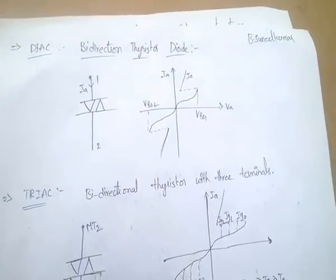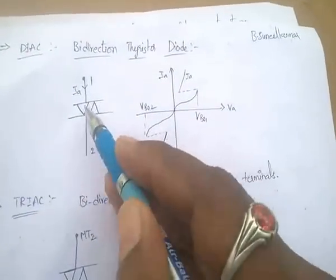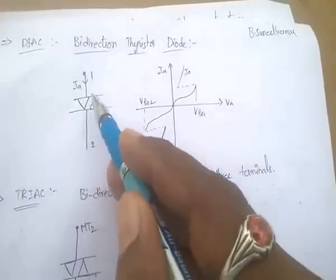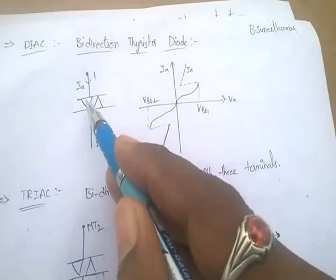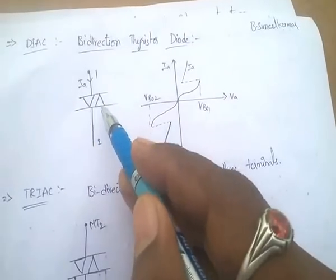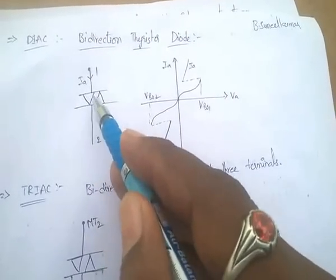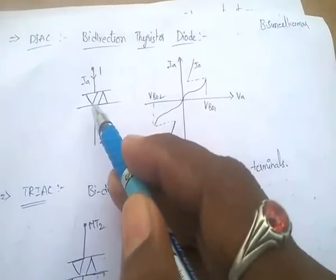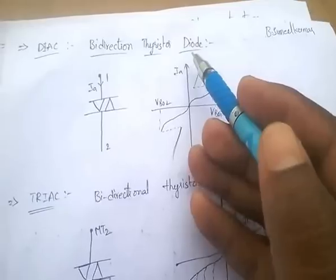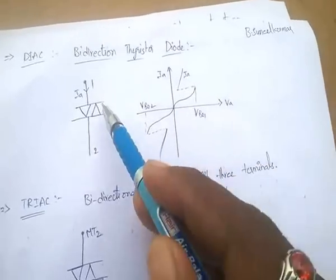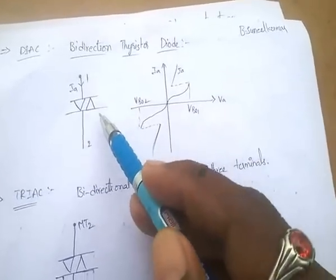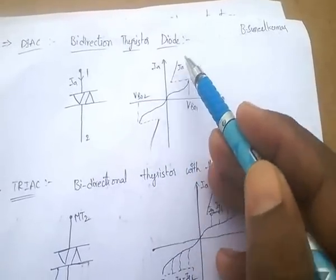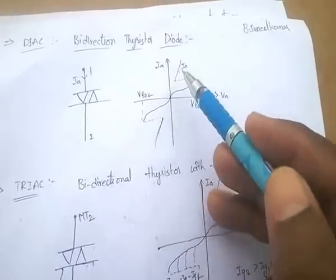Next device: DIAC — a bidirectional thyristor diode. Diodes are connected in both directions, meaning it is a bi-directional thyristor diode with the corresponding VI characteristics.